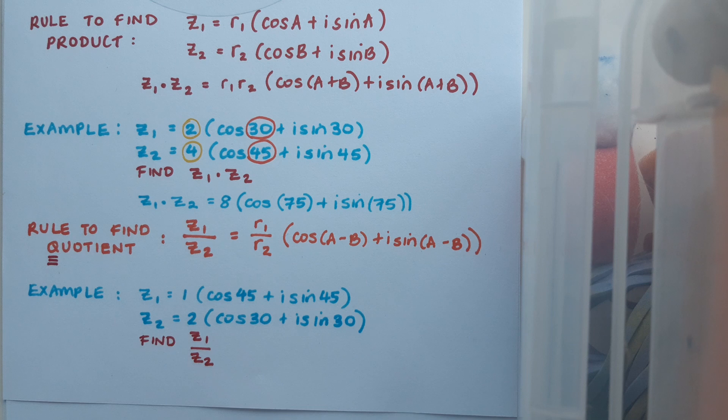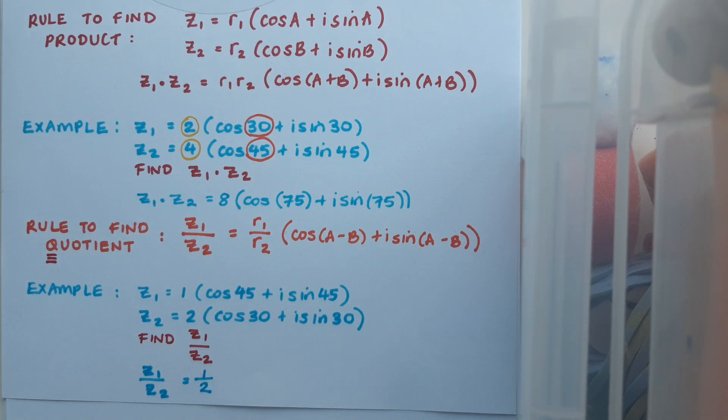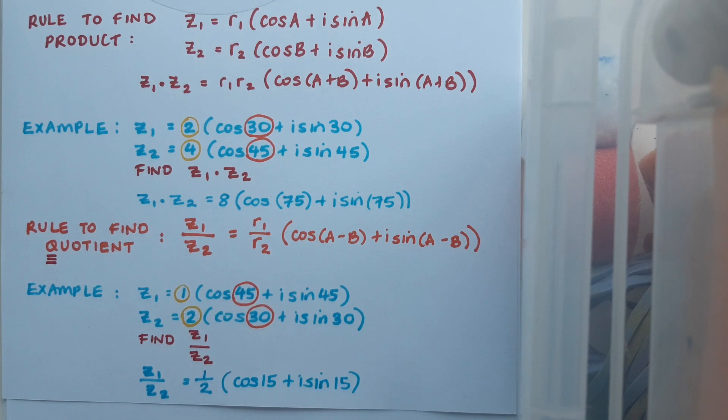So here I have an example with z1 = 1(cos 45 + i sin 45) and z2 = 2(cos 30 + i sin 30), and I want to find z1 over z2. Like we just mentioned in the formula, it's going to be the modulus of z1 divided by the modulus of z2, which is 1 over 2. And then we're going to subtract the angles, so 45 minus 30, which gives us cos 15 + i sin 15. Job done, really simple.